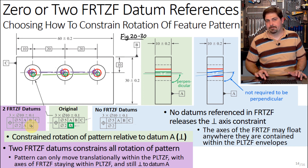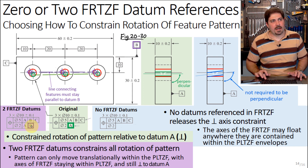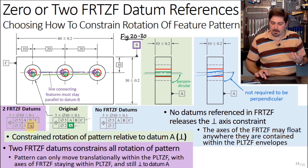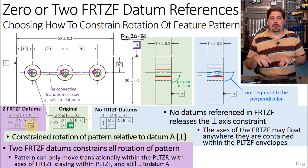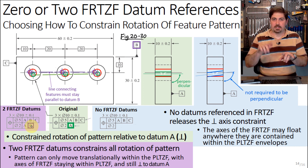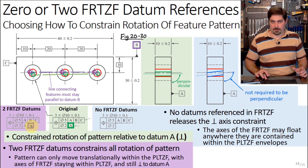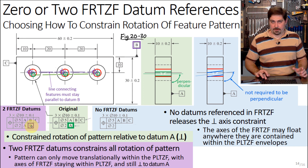Adding the datum B reference means the line connecting those features must stay parallel — or more precisely, maintain its rotational orientation relative to datum B — as the pattern moves around. The most common case is that it would be parallel to datum B. No matter what, the actual axes of the features themselves must lie within both tolerance zones.